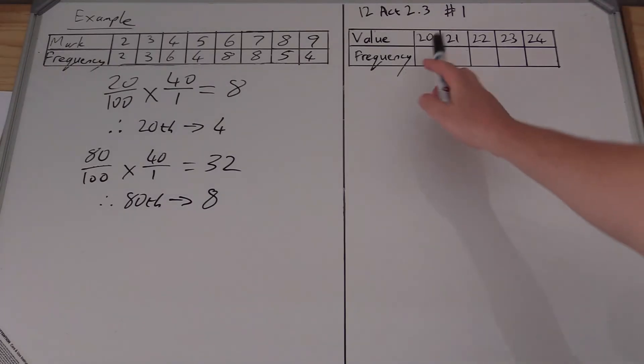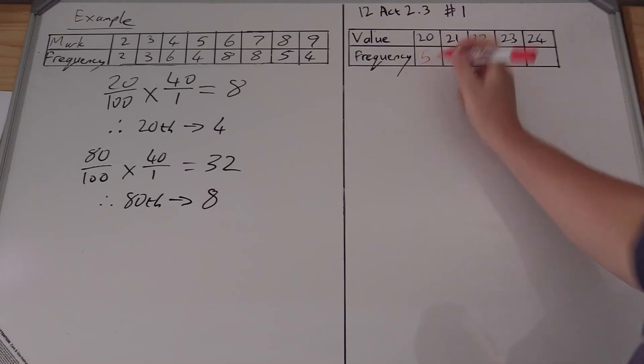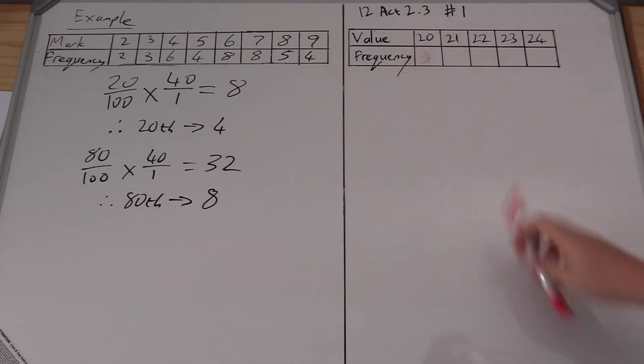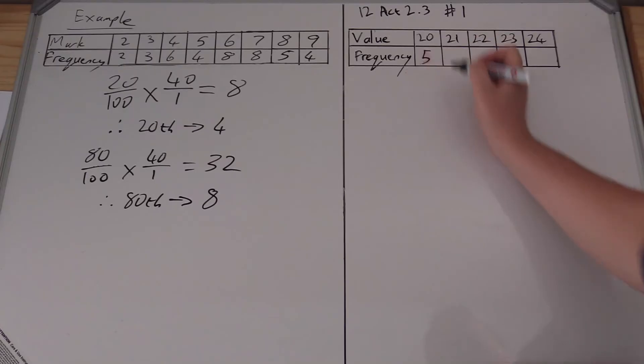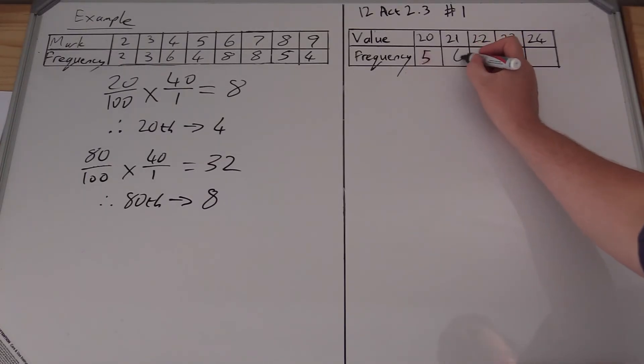I've grouped it into 20, 21, 22, 23, 24. So if I go and take my data and do the frequency of this, I would get 5 in 20, I've got 6 21s, 5 22s, 8 23s, and 6 24s.